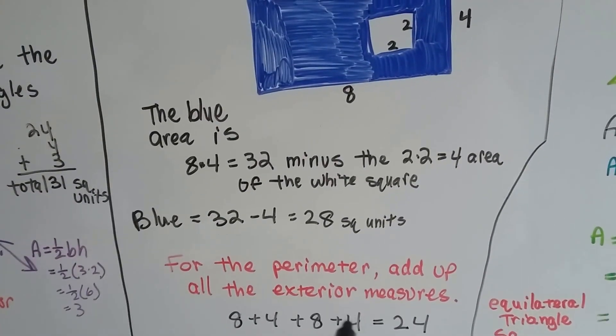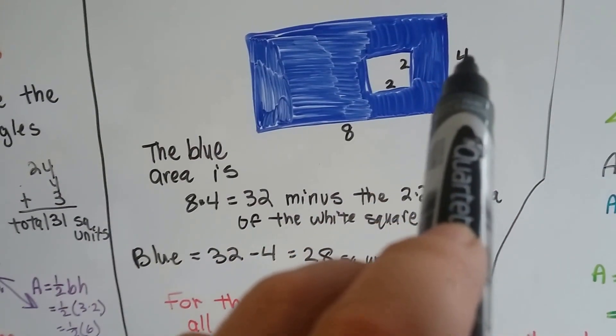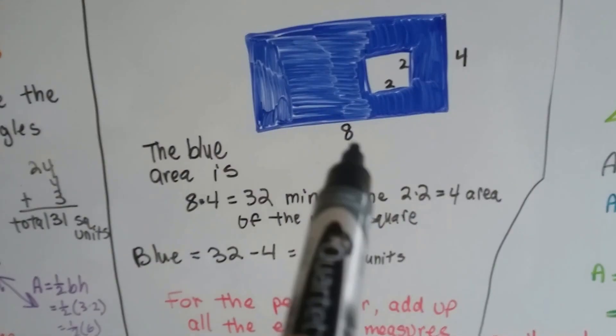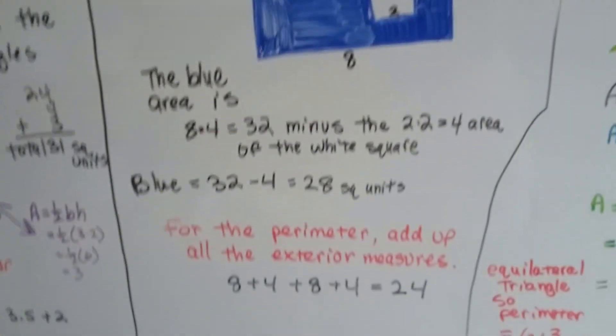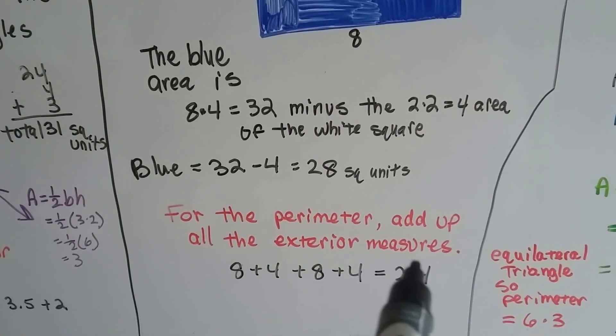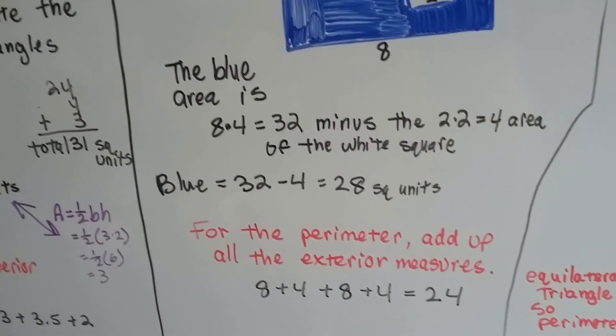For the perimeter, we just add the exterior measures. If this is 4, then this is 4. If this is 8, then that's 8. We add the 8 plus 4 and 8 plus 4, and we get 24 for the perimeter.